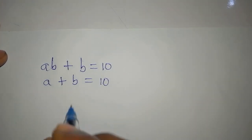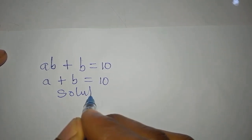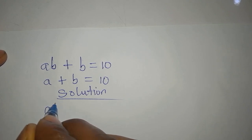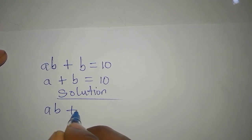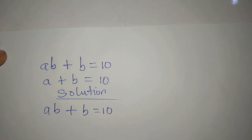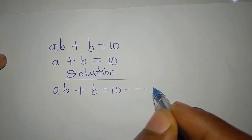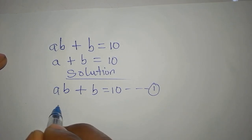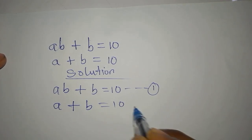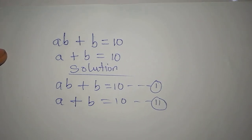Hello everyone. Let's provide a solution to this problem: AB plus B equals 10 — this is equation 1. Then we have A plus B also equals 10, and we have this as equation 2.